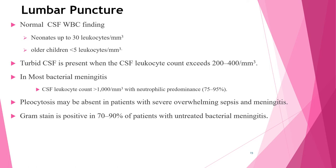In partially treated bacterial meningitis, pleocytosis with neutrophil predominance, elevated protein, and reduced CSF glucose will usually persist for several days and are used to make a presumptive diagnosis. We rely on CSF WBC count, protein, and glucose — not Gram stain and culture — in partially treated cases. A traumatic tap complicates interpretation: in that scenario we depend on Gram stain, culture, and glucose level rather than cell count and protein.